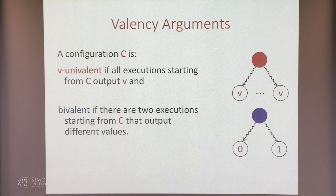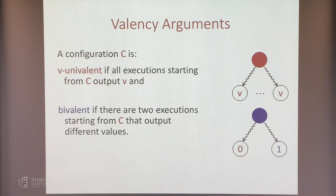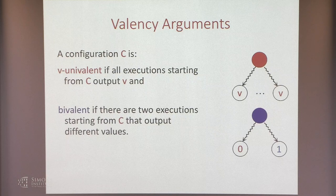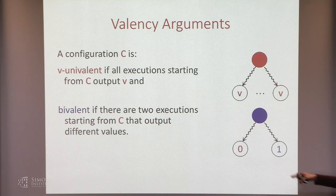Valency arguments were first introduced to prove the impossibility of solving consensus in asynchronous models. A configuration C is said to be V-univalent if all executions starting from C output V. Univalent means there's only one possible output. We say it's bivalent if there are two executions starting from C that output different values — in particular, 0 and 1.